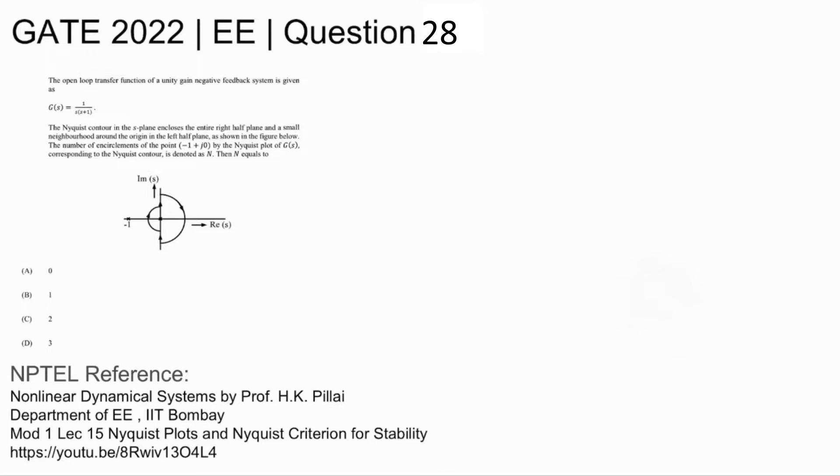The number of encirclements of the point minus 1 plus j0 by the Nyquist plot of G(s) corresponding to the Nyquist contour is denoted by N. Then N is asked. Four options are given.